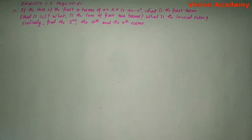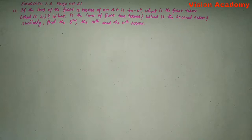If the sum of the first n terms of an AP is 4n minus n square, what is the first term? That is S1. What is the sum of first two terms? What is the second term? Similarly, find the third, the tenth and the nth terms.